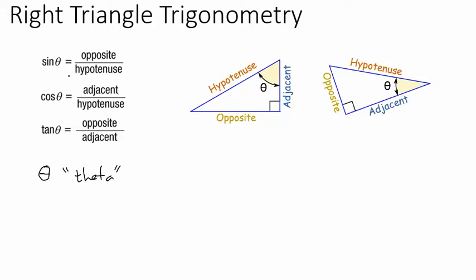These sides are dependent upon the angle. The first formula is the sine of theta, abbreviated S-I-N. The sine of theta is the side opposite theta divided by the hypotenuse. The hypotenuse is always the longest side of the triangle, found across from the right angle. That leaves the two other sides for opposite and adjacent.